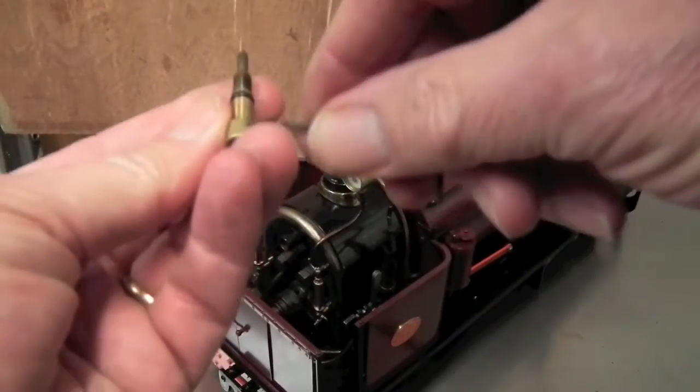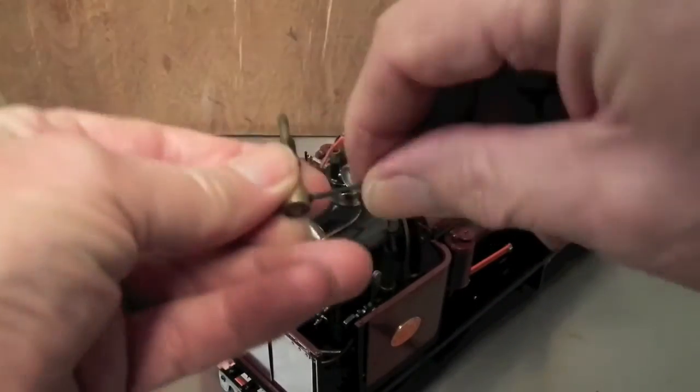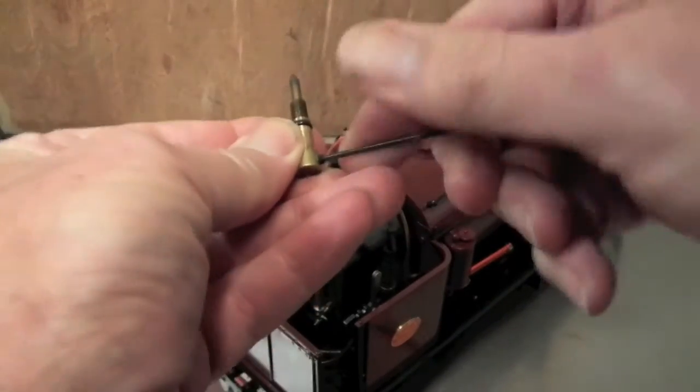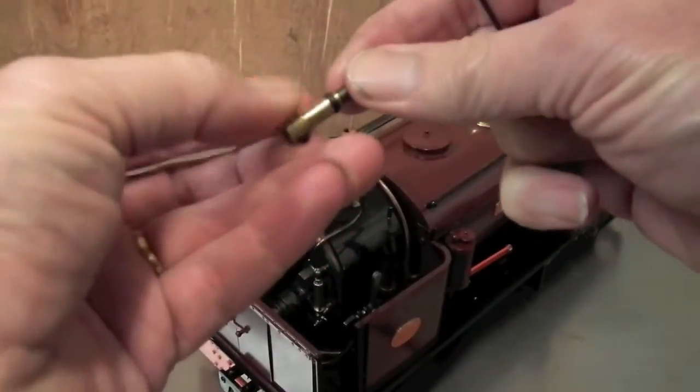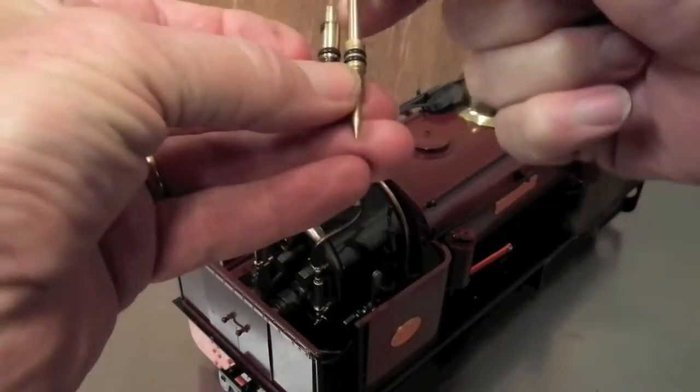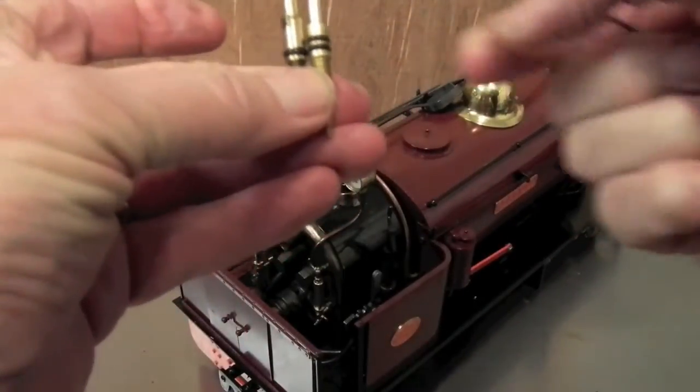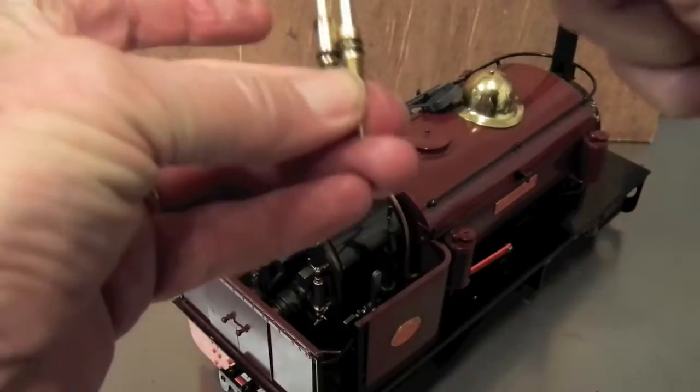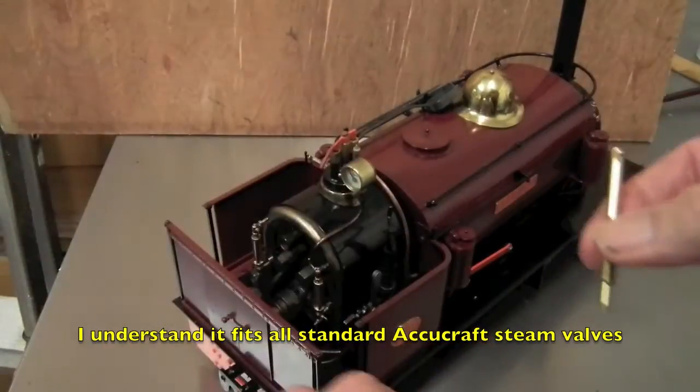Using an allen key that comes with the loco, just quickly undo that little socket headed screw. Now we can see that this is in fact a lot shorter, so I'm going to have to shorten this because this is a universal one that fits on most locos.